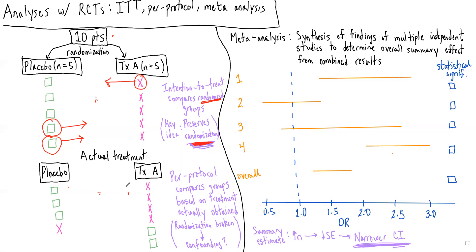The problem with a per-protocol analysis is that because we're not comparing groups as they were randomized, this randomization is broken. And therefore, that allows for potential confounding to come into play and to play a role in shaping the findings that we have.